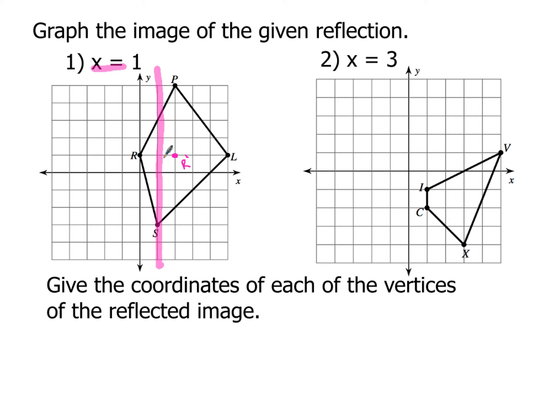Next I want to move up to the letter p. p is on the right hand side so its mirror image is going to be over on the left hand side of the line x equals one by one unit. So p prime is going to be right here.